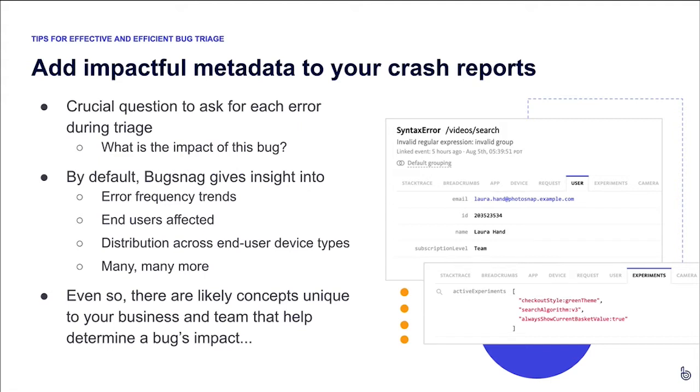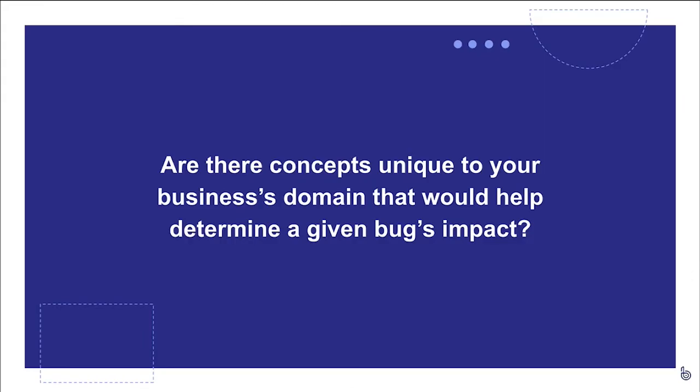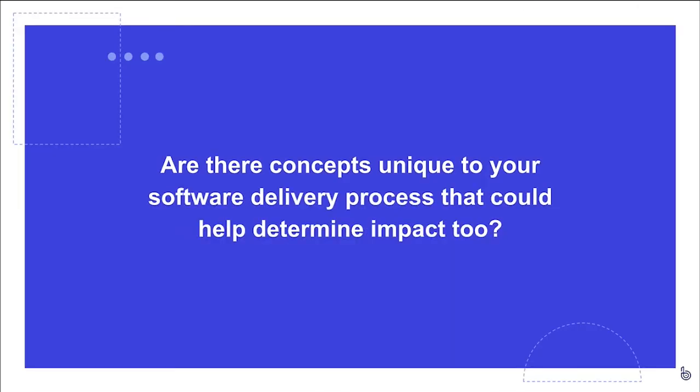The takeaway here is to think about how this relates to your business and your domain. Are there concepts unique to your business's domain that would help you determine a given bug's impact? This is something to think about and to discuss with your teams. Similarly, are there concepts unique to the way you deliver software that could also help determine impact? Maybe you use A/B testing, maybe you use feature flags, maybe you have opt-in beta programs for your users.